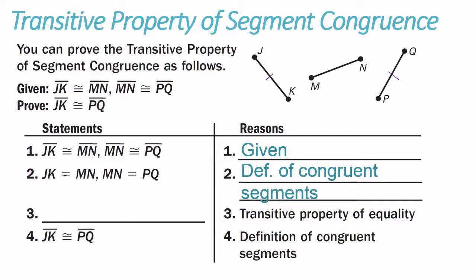In step two, MN is repeated twice, so we can get rid of the middleman MN and say that JK equals PQ — the length of JK equals the length of PQ — using the transitive property of equality. From here, our final step: if the length of JK equals the length of PQ, then line segment JK is congruent to line segment PQ, which is the definition of congruent segments.